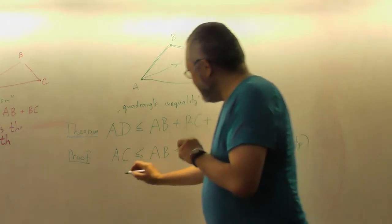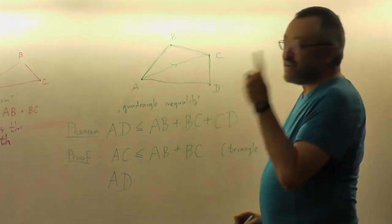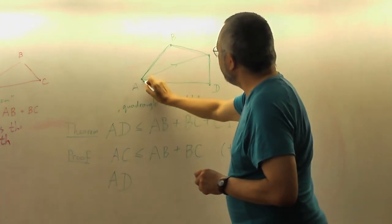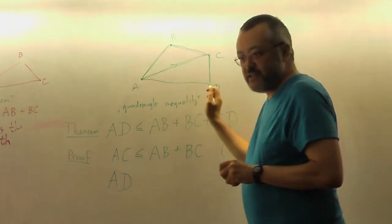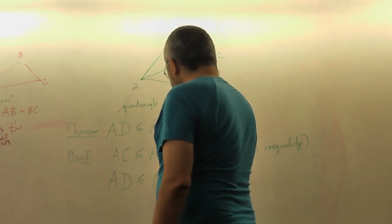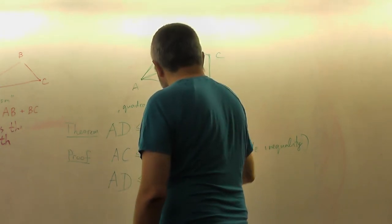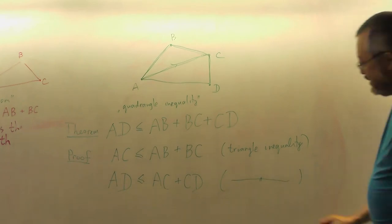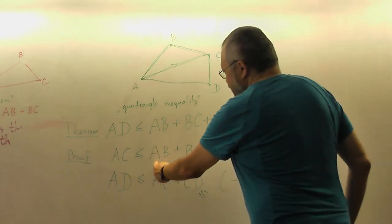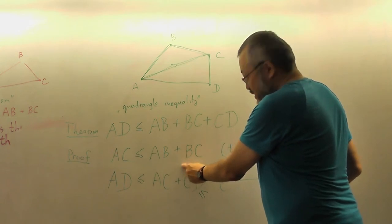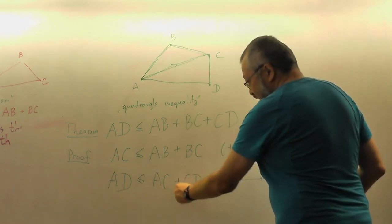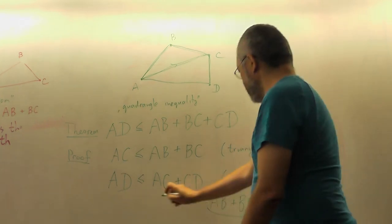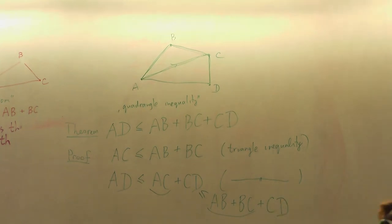AC plus CD. So we compare the path ACD with AD. We say that AD is smaller than AC plus CD. It's the triangle inequality. We can increase AC and replace it by AB plus BC. So if this is smaller than this, then the sum is smaller than AB plus BC plus CD. This is because this is compared to AC plus CD.